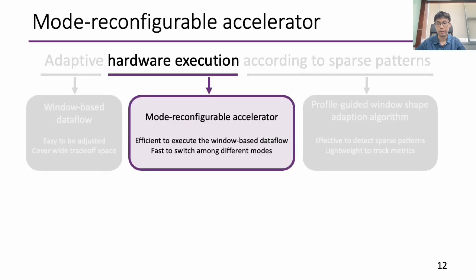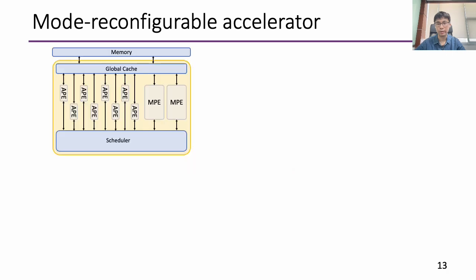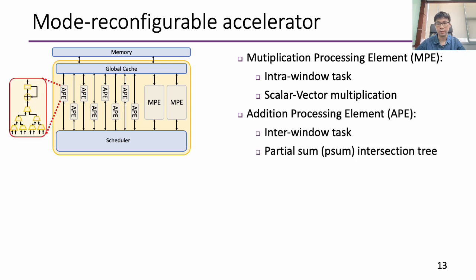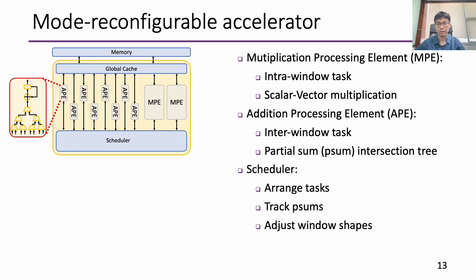To support the window shape data flow, we propose the mode-reconfigurable accelerator. Our accelerator is composed of MPE, APE, scheduler, and global cache. The MPE unit performs intra-window tasks with multiple scalar-vector multiplications executed in parallel. APE performs inter-window tasks, which further merges partial sums, and is composed of a comparator tree, an adder, and an accumulation register. The scheduler is designed to arrange tasks, track partial sums, and adjust window shapes. The global cache caches B rows and partial sums for enhanced data reuse.